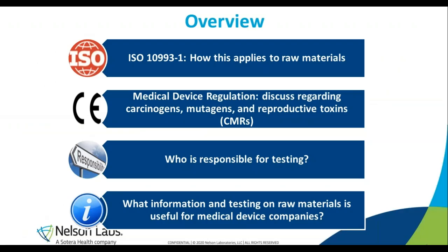For today I want to give an overview of the presentation. It's going to be in four sections. The first two sections will be a little lengthy because we're going to talk about the regulations for medical devices and how we can apply those to raw materials. First we'll talk about the ISO 10993 standards, which are the biocompatibility standards we use to assess medical devices. Then we'll talk about the new MDR and a regulation that applies to raw material suppliers. Then we'll discuss who is responsible for testing and what information and testing on raw materials is useful for medical device companies.